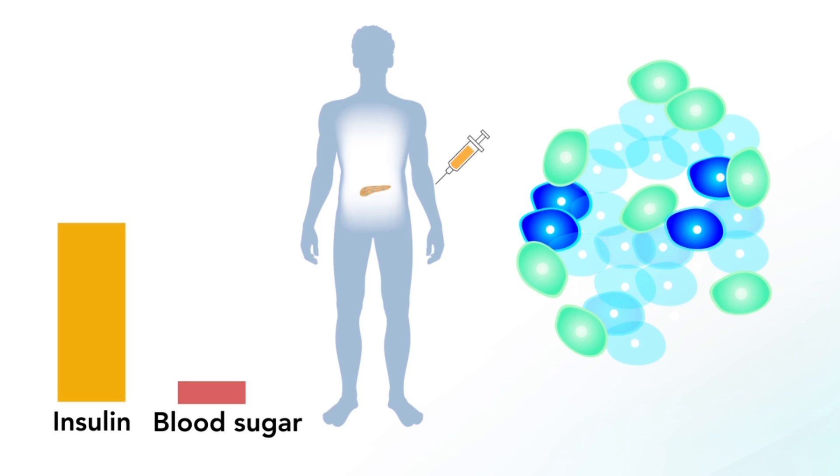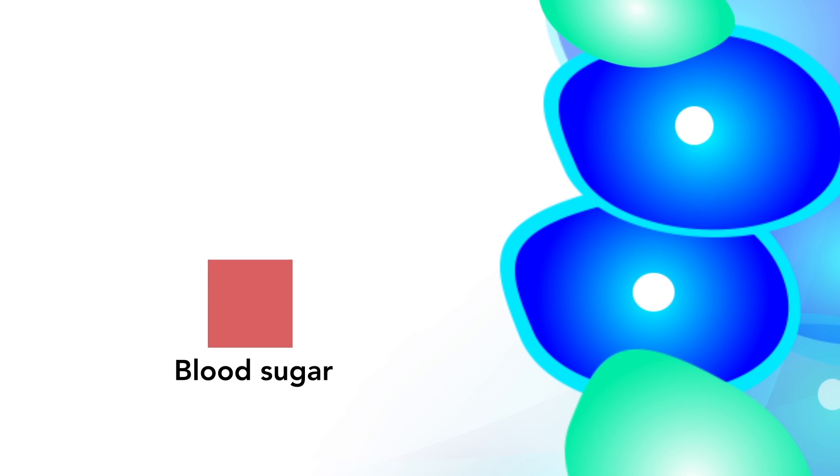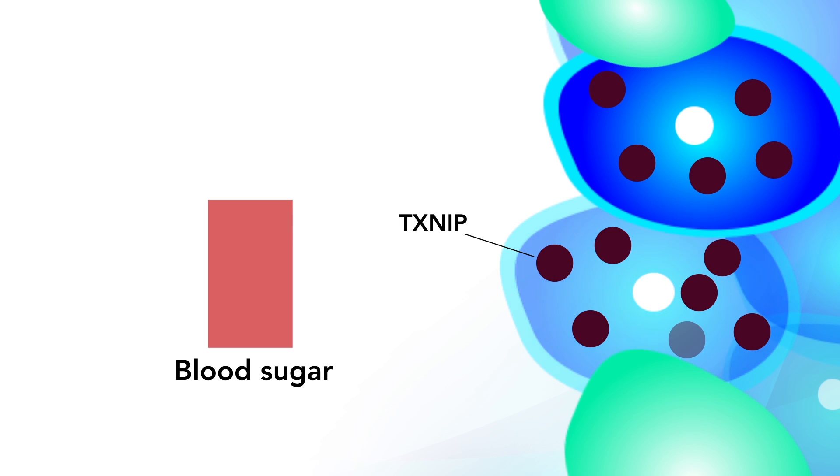But that could change. Over years of research, UAB scientists have proven that high blood sugar causes the body to overproduce a protein called TXNIP, and that beta cells die when they are exposed to high levels of TXNIP.